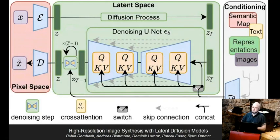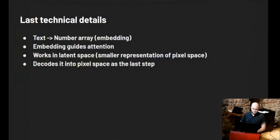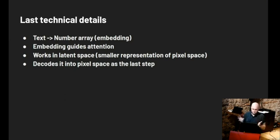For more technical details there are all these very important modules — they compute numbers, I guess. I don't understand all the details either. There are a couple more relevant points: first, it takes the text you write and converts it into basically an array of numbers that is somehow pointing to the concept you described in a multi-dimensional space, and it uses this array of numbers to guide the denoising process towards the image it's going to generate.